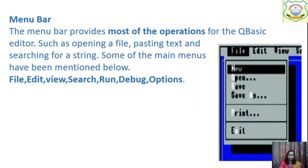We have the document area where we can write the program, and there are menus which are the commands available in Q-Basic. What is the menu? The menu provides most of the operations we can do with the Q-Basic editor. The menu bar is divided into different types of menus.